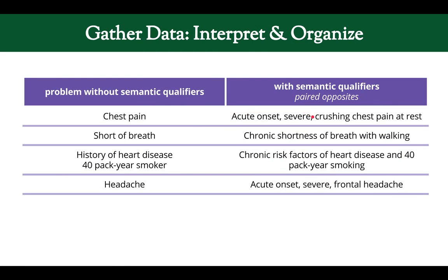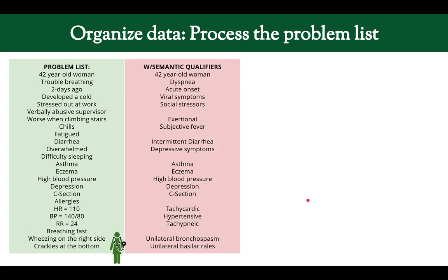Here are examples of what a problem looks like without versus with semantic qualifiers. For chest pain, you could say 'acute onset, severe, crushing chest pain at rest' — look at the detail you gain by using semantic qualifiers. You can pause the video to read the other examples. For our case: '42-year-old woman' stays the same; 'trouble breathing' becomes dyspnea, noted as acute onset.